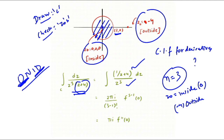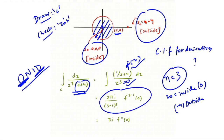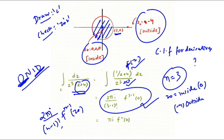The singular point is at z₀ = 0, and f(z) = 1/(z + 4). Now apply the Cauchy integral formula for derivatives. The generalized formula gives 2πi / (n − 1)! × f^(n−1)(z₀). Substituting n = 3: the result is 2πi / 2! × f''(0), which simplifies to πi × f''(0).